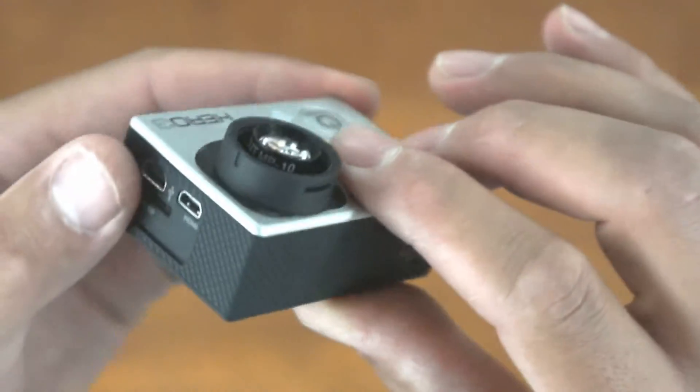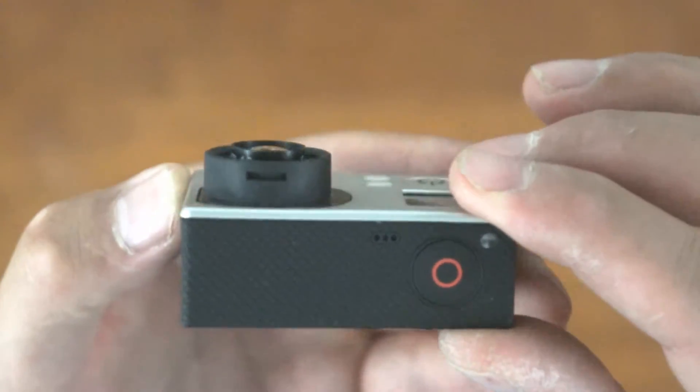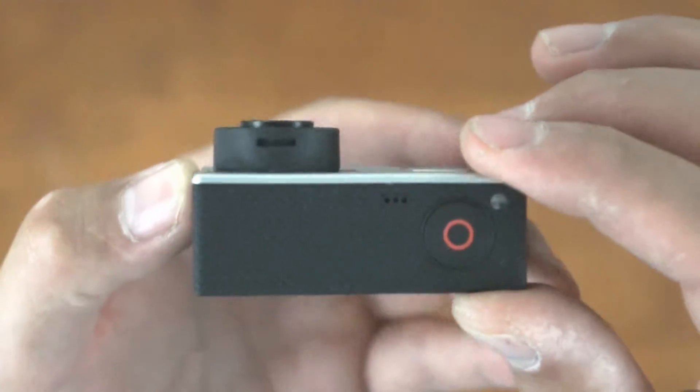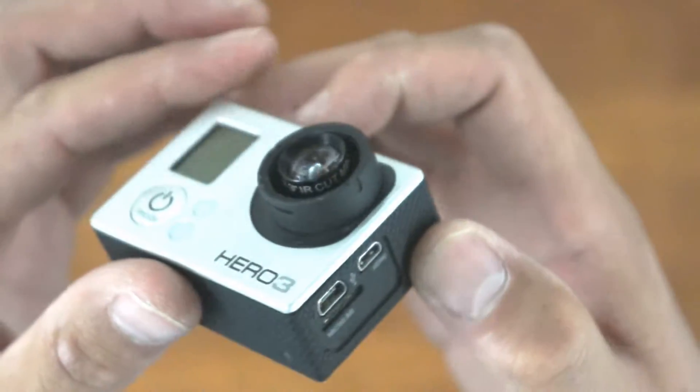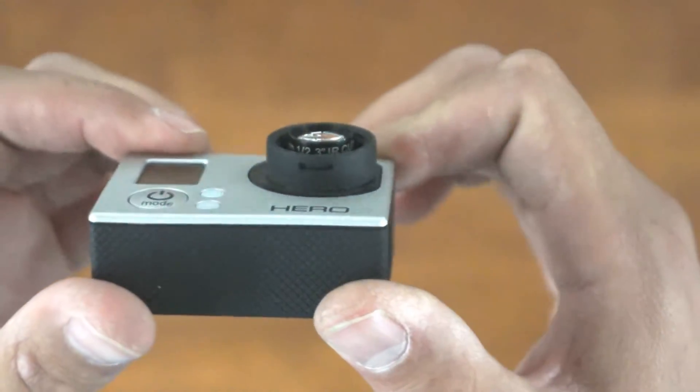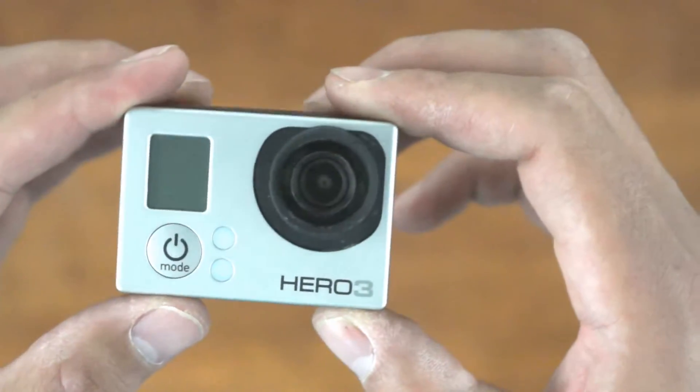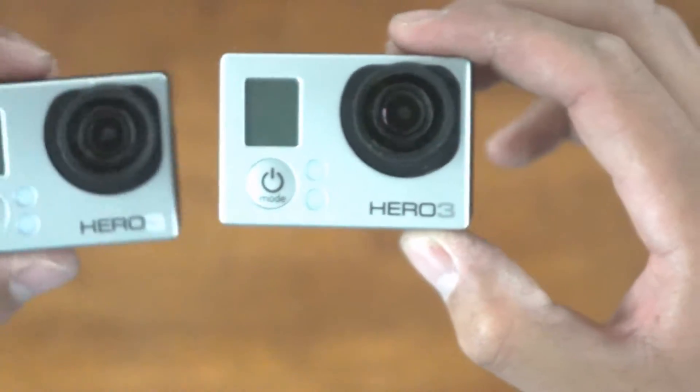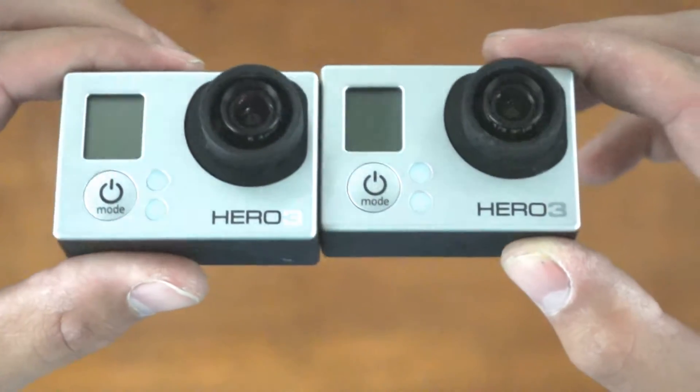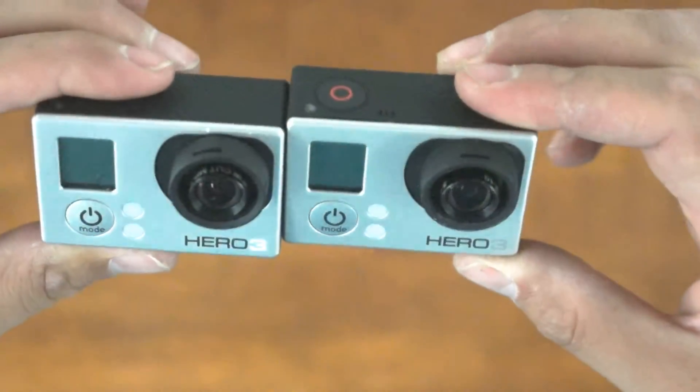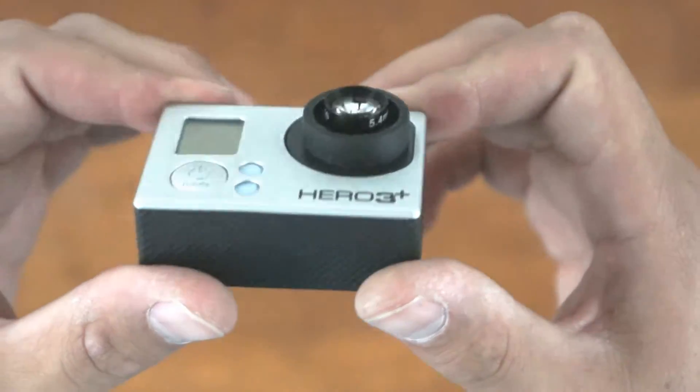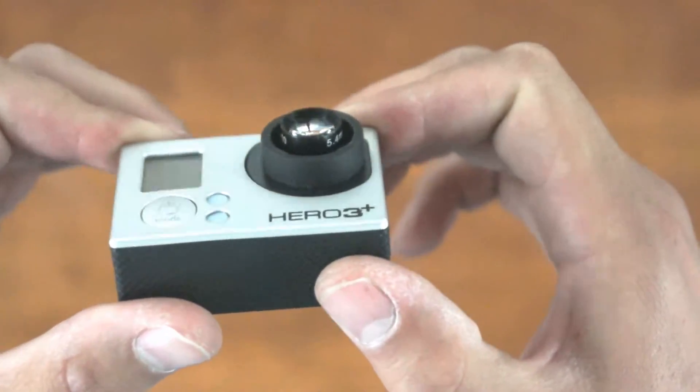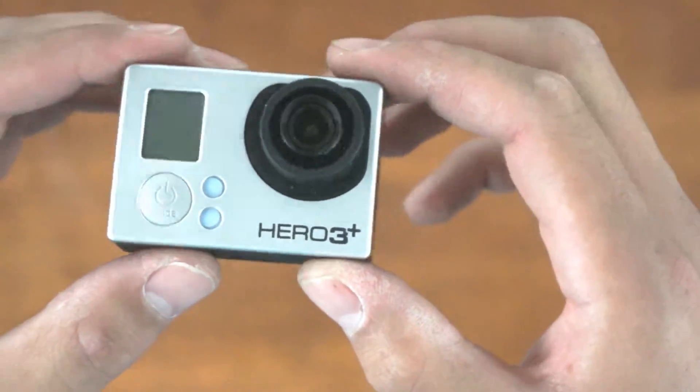And keep in mind the stock lens mounts do not allow you to install this particular lens. For instance, a 5.4mm 10MP lens is not able to be installed on the stock lens mounts in the non-Plus cameras—White and Silver non-Plus cameras. Of course, as mentioned, the 5.4mm definitely works in the stock Black 3 Plus camera.